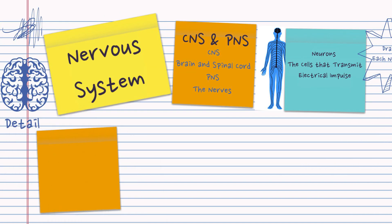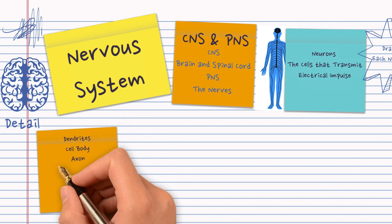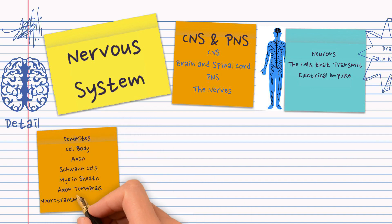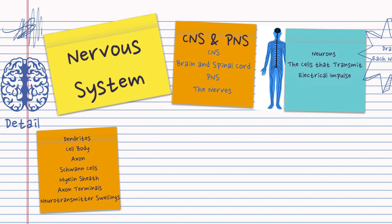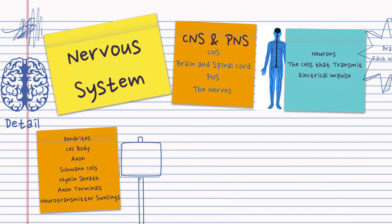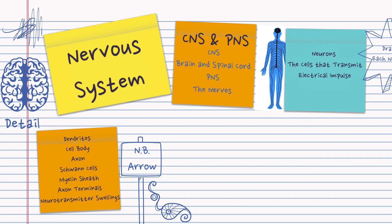And the key labels which you should include in your diagram are dendrites, cell body, axon, Schwann cells, myelin sheath, the axon terminals and the neurotransmitter swellings. Not forgetting the arrow showing the direction of the impulse.